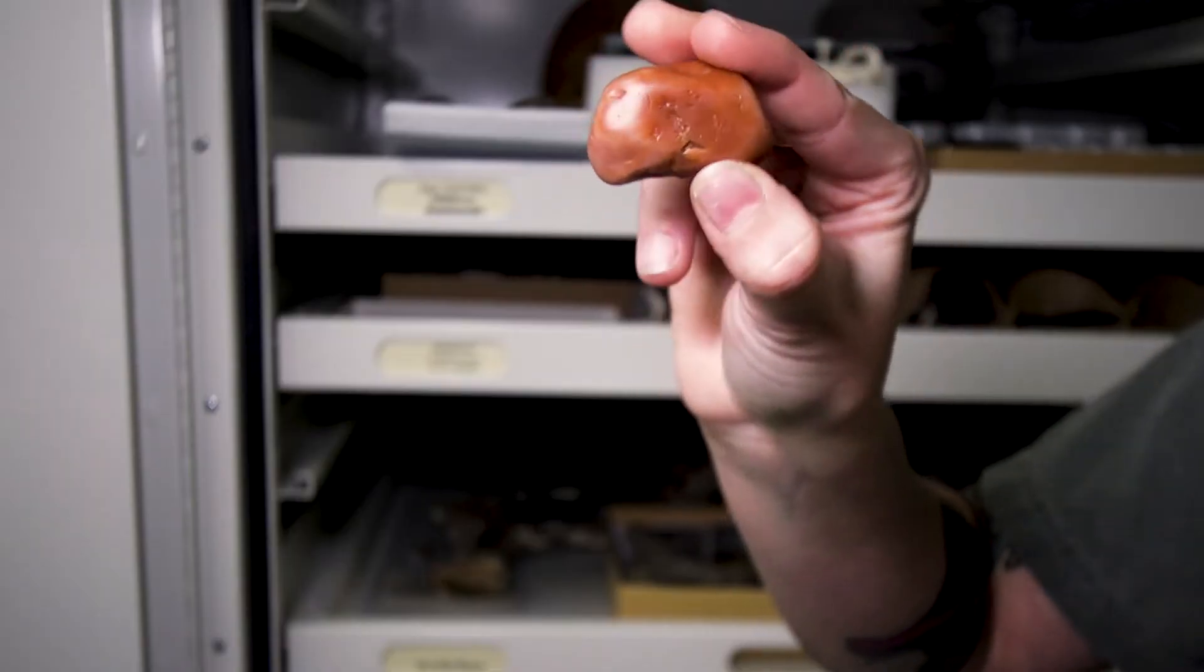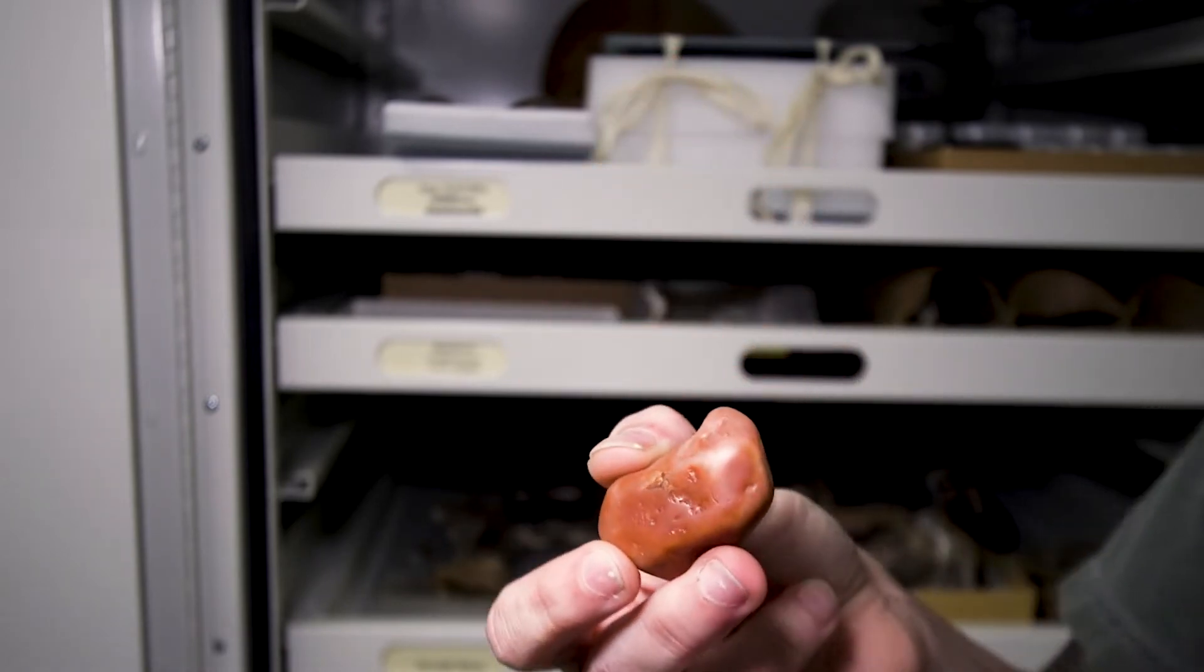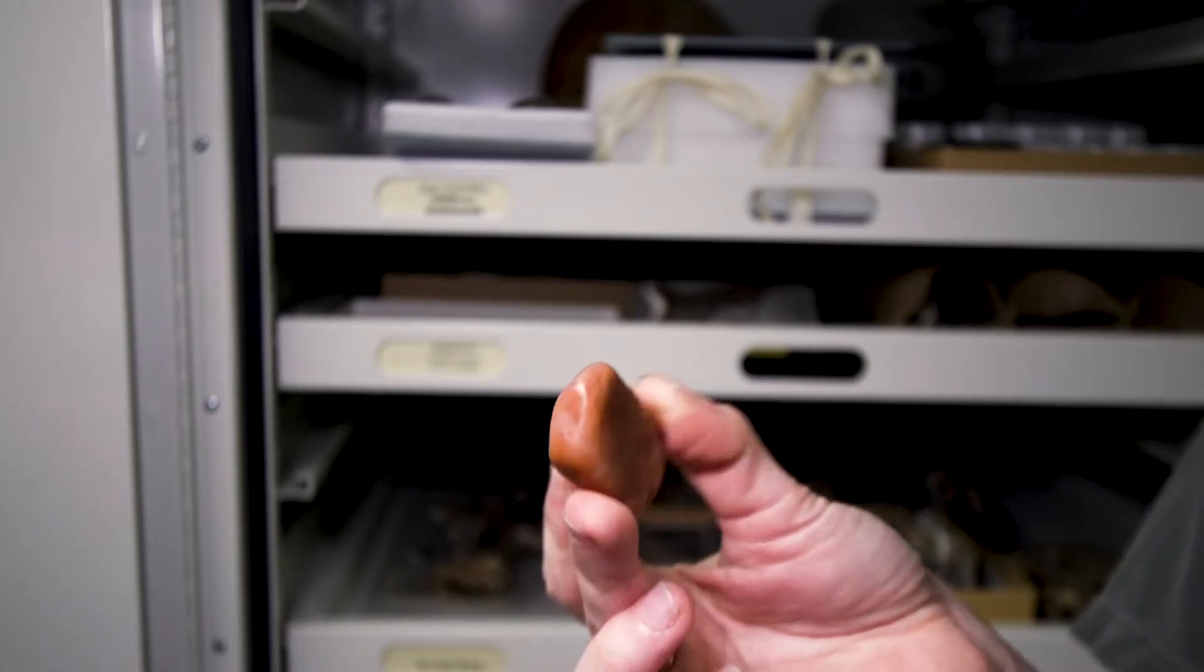A lot of modern organisms or animals today have gastroliths. Things like crocodilians or crocodiles and alligators as well as many herbivorous birds, seals and sea lions.